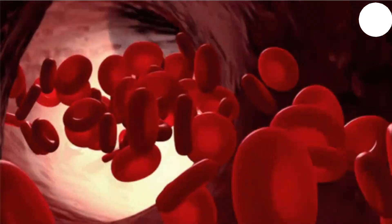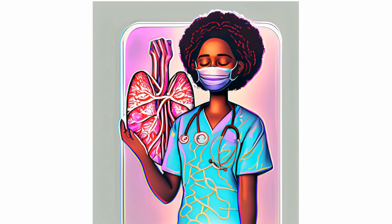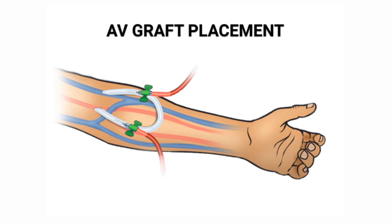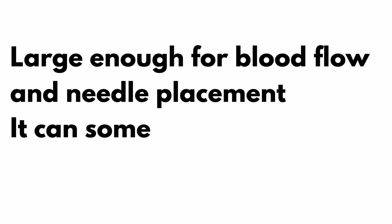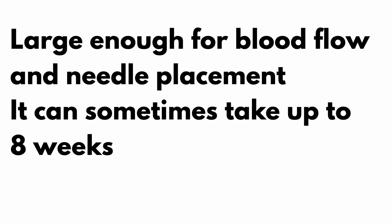If an AV fistula doesn't mature properly, surgical interventions may be needed. If a patient cannot have an AV fistula, we might use a graft instead. A graft is a connection between an artery and a vein using synthetic material. It is usually large enough for blood flow and needle placement immediately, although it can sometimes take up to eight weeks before it can be used.